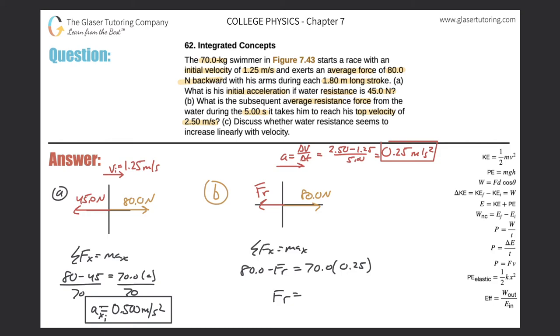62.5 newtons. And that's what we should have expected, right? If the acceleration went down, then the resistive force must have gone up. It was 45 in case A and now it's 62.5.